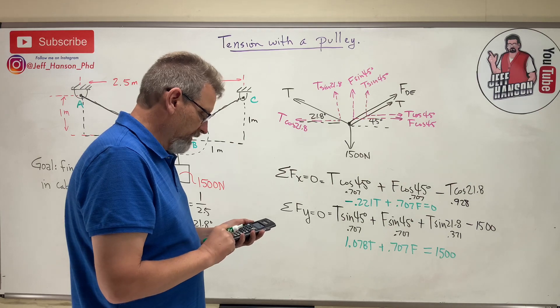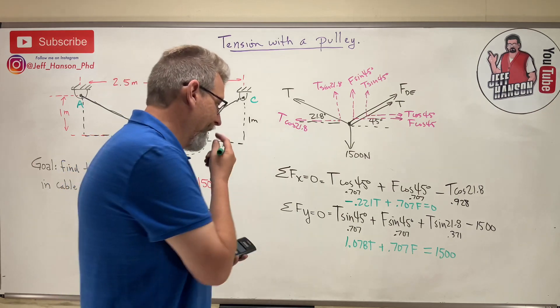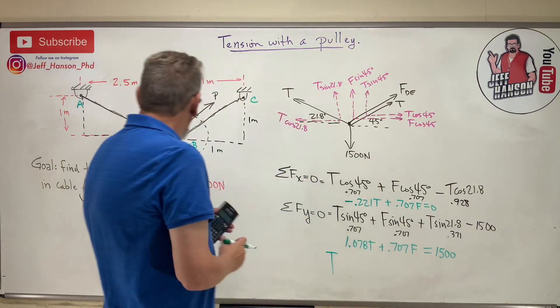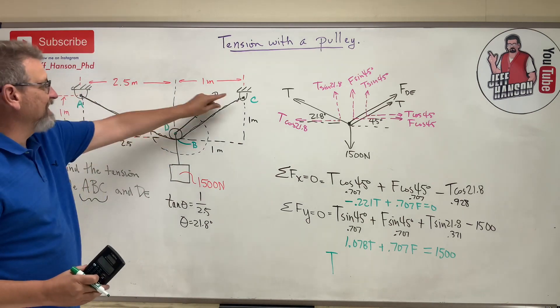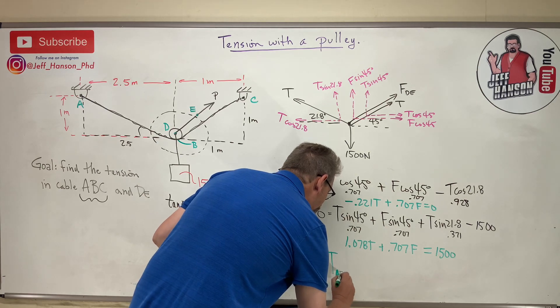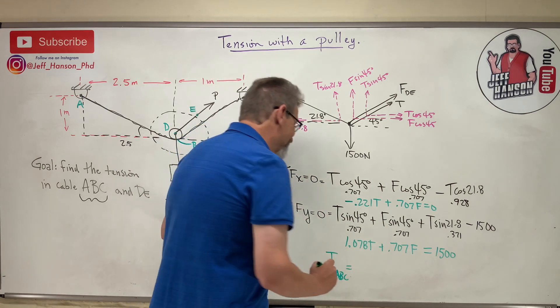So T, which is T ABC, right? The tension in this cable here - T ABC is equal to 1154.7.